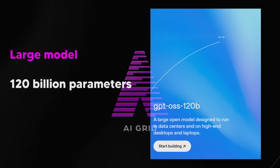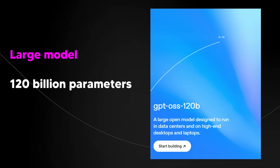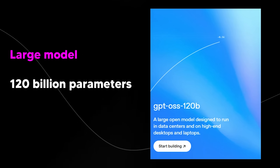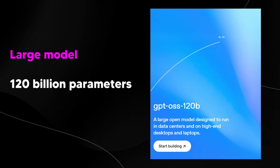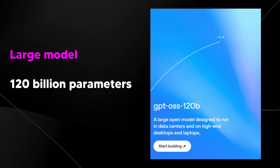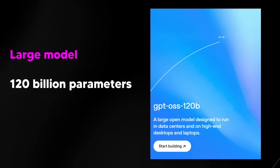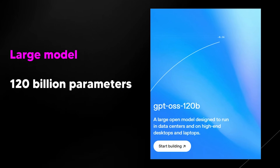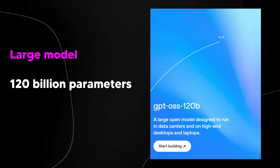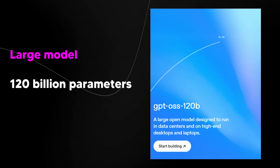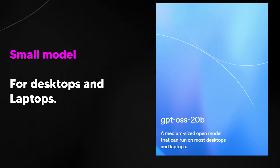The first model OpenAI released is the largest one at 120 billion parameters — GPT Open Source 120B. It's designed to run in data centers and on high-end desktops and laptops. Most people probably won't be able to run this because it fits into a single H100 GPU with 117 billion parameters and 5.1 billion active parameters.